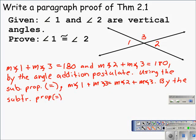we can change this line or this equation into the measure of angle 1 is equal to the measure of angle 2. We effectively subtracted the measure of angle 3 from both sides with the subtraction property of equality.